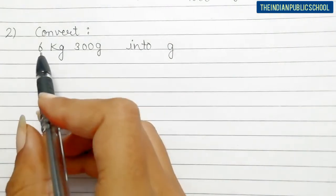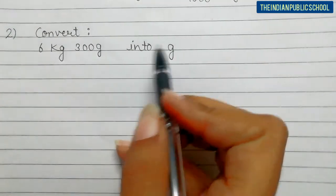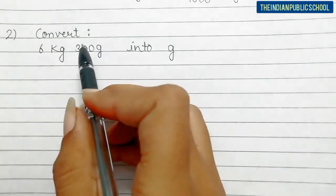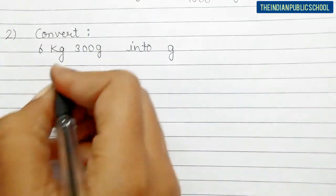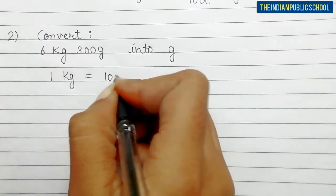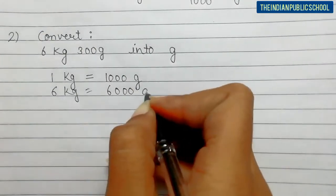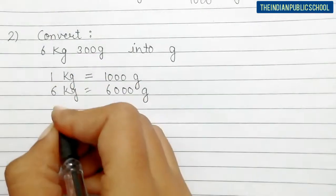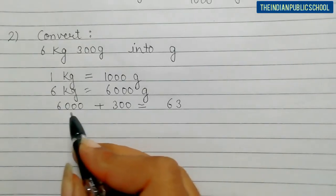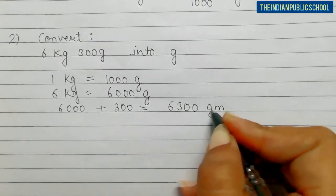The question is: convert 6 kg 300 grams into grams. We need to convert the whole value into grams. We will convert 6 kg into grams; the rest is already given in grams. You know 1 kg equals 1000 grams, so 6 kg equals 6000 grams. The extra 300 grams is already given, so 6000 plus 300 equals 6300 grams. You can write gm or g.